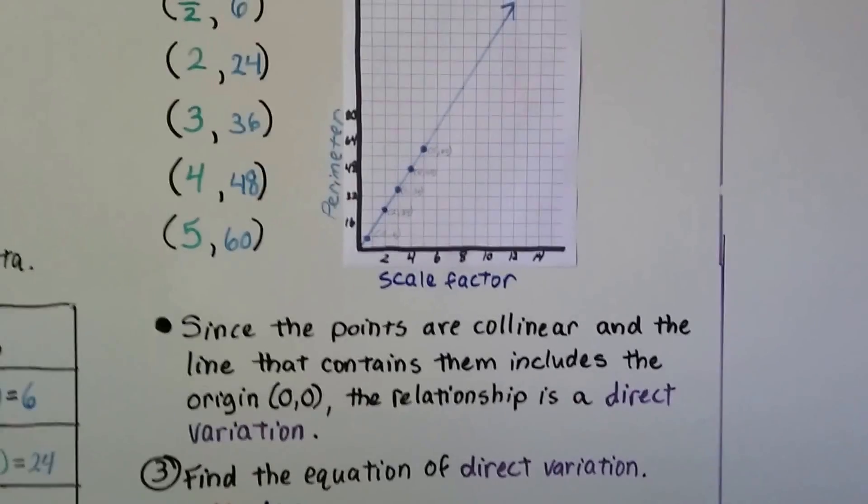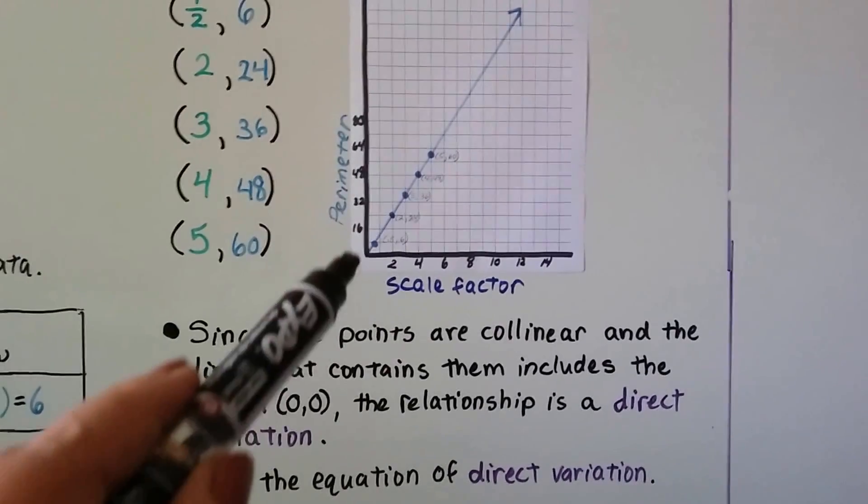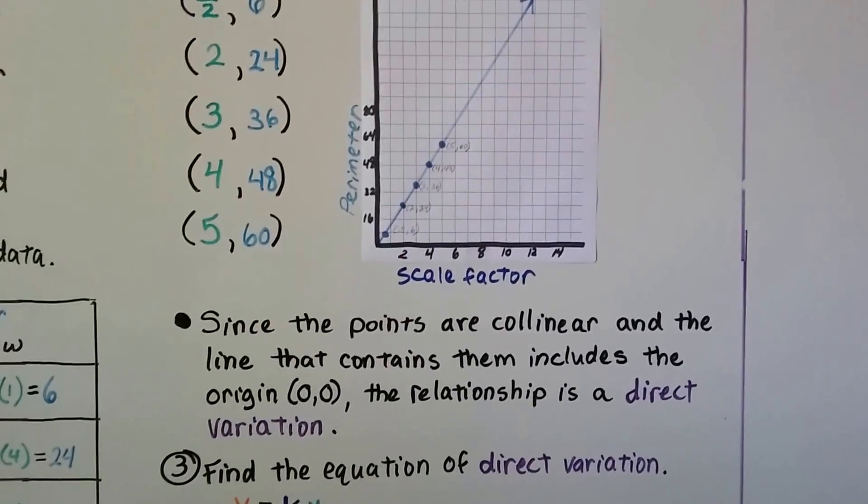Since the points are collinear and the line that contains them includes the origin 0, 0 right here, the relationship is a direct variation.